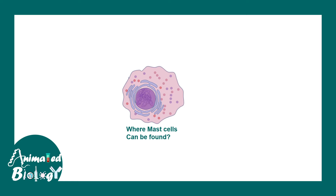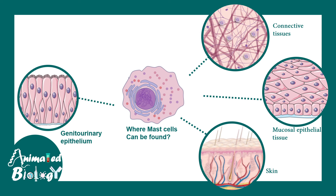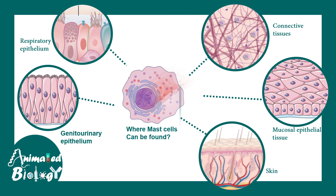Where can mast cells be found? They can be found in many epithelial layers and in connective tissues as well — mucosal epithelial tissues, skin, and especially they are found in the genitourinary tract and respiratory epithelium.